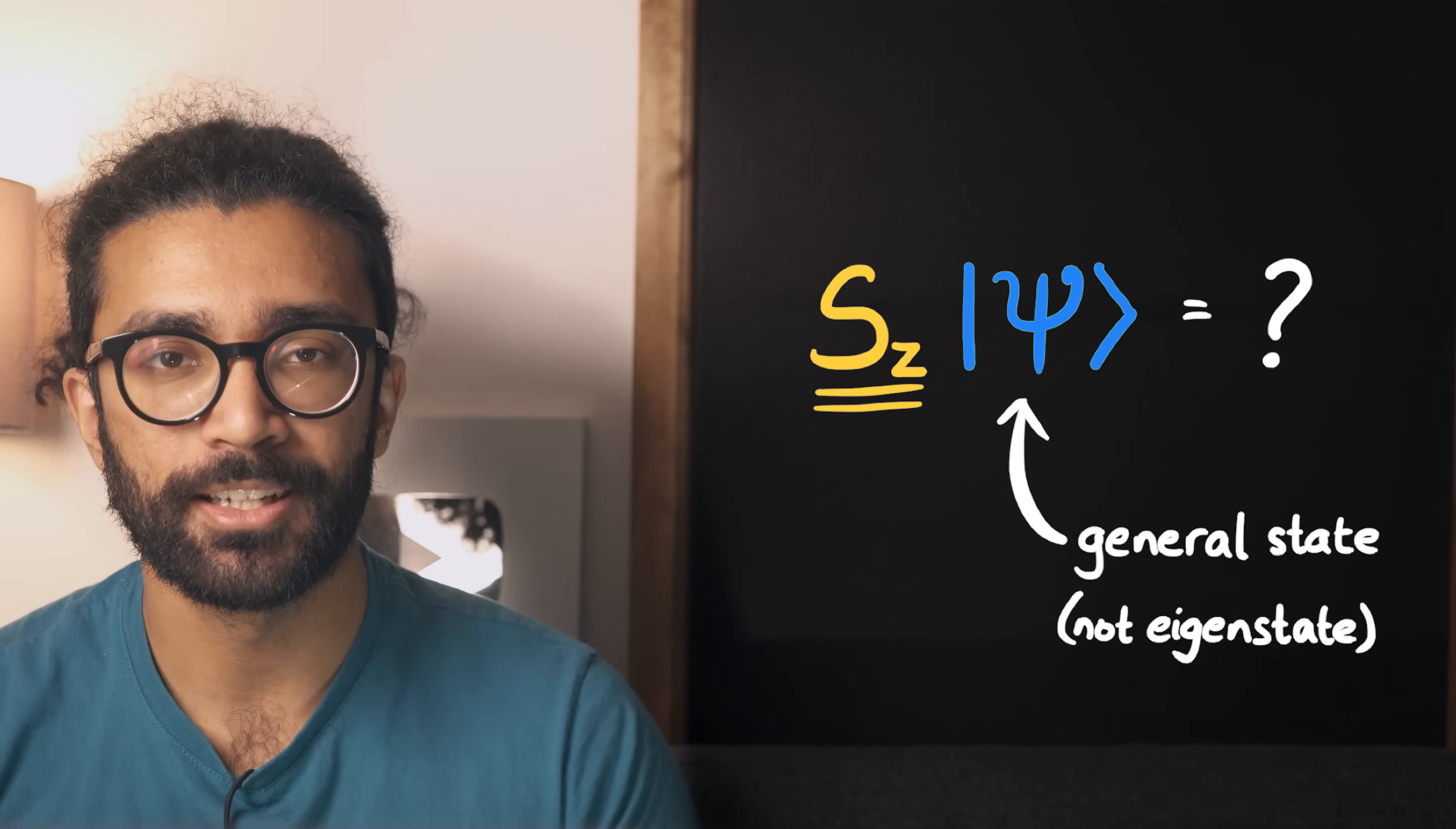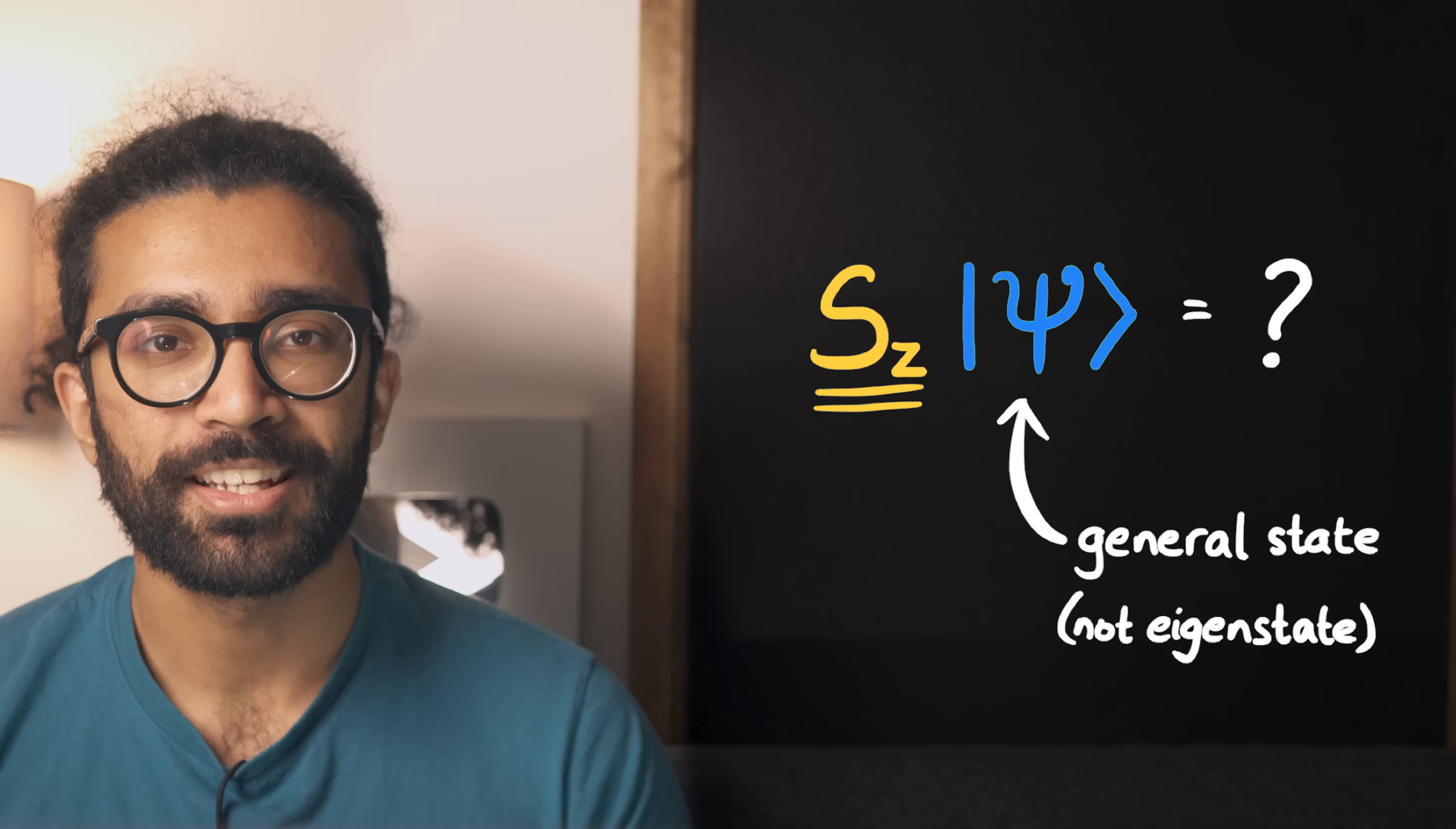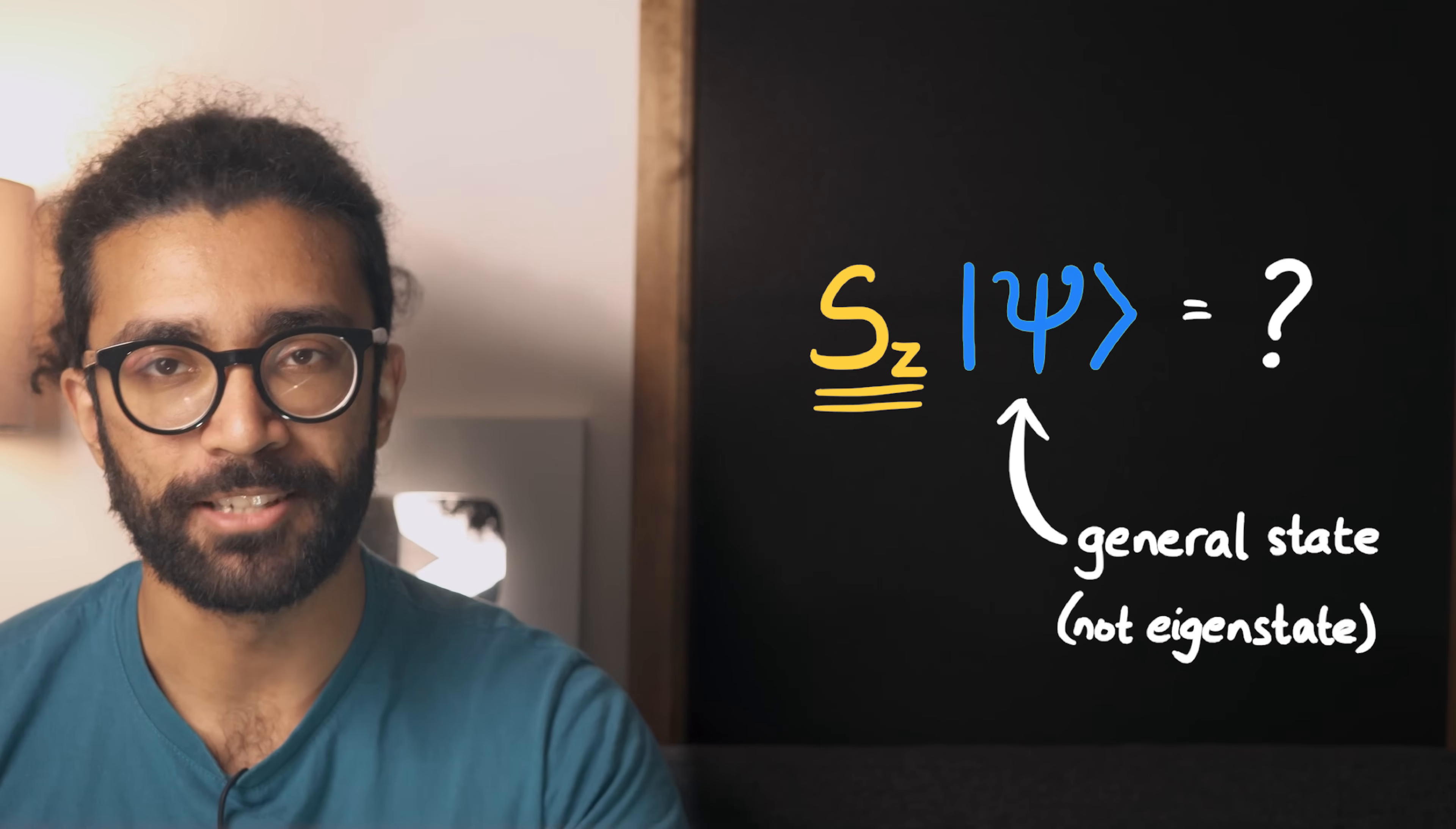But what happens if our system is not initially in an eigenstate? What happens if we apply our measurement operator to some other state vector? Well, let's once again recap our mathematical perspective from earlier.